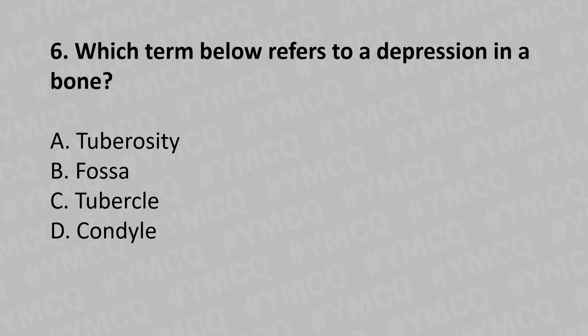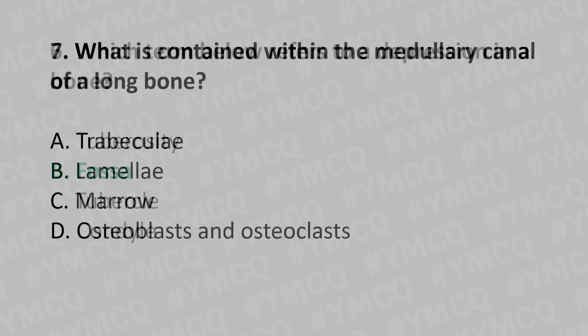Moving to our sixth question: Which term below refers to a depression in a bone? Option A: tuberosity, Option B: fossa, Option C: tubercle, Option D: condyle. The answer is Option B: fossa.